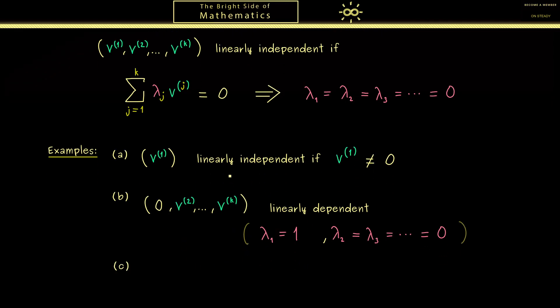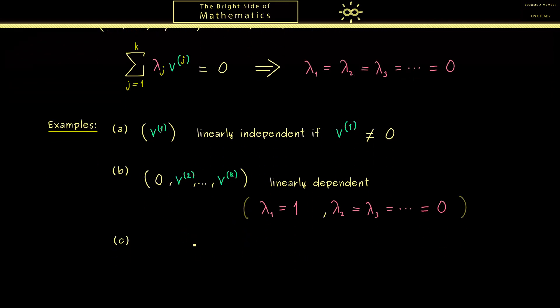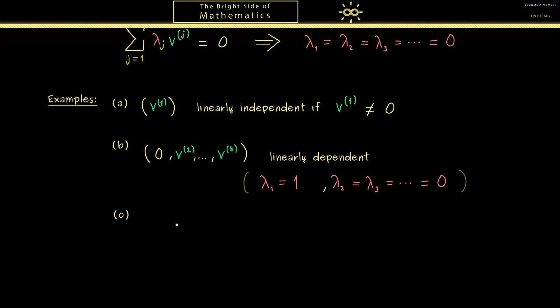OK, there we had two general abstract examples, so let's go to a more concrete one. Therefore I would suggest first choosing an example with vectors in R^2. So you see we have three vectors with two components.